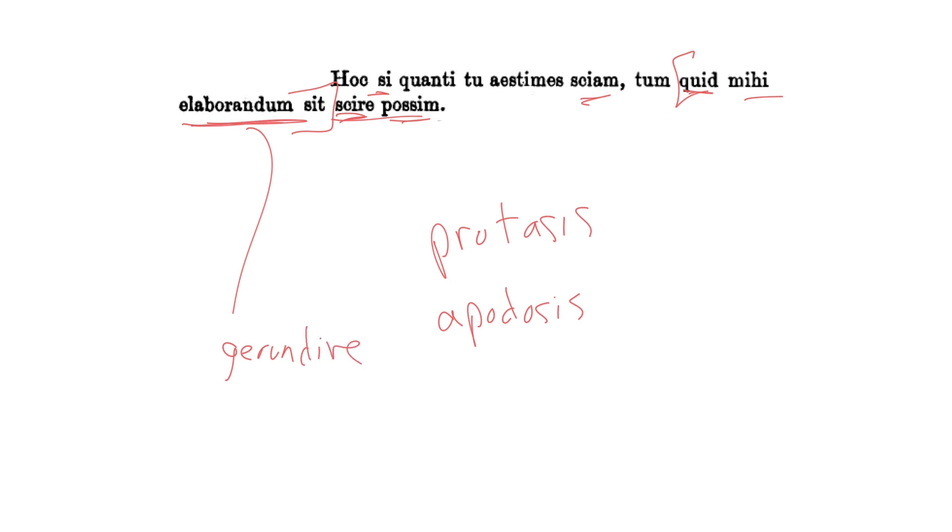So elaborandum here is the gerundive, that is the verbal adjective. It's from the first conjugation verb elaboro, elaborare, like that. With sit, this whole thing is called the passive periphrastic. Remember I said there was a lot of grammar in this one. Passive periphrastic with mihi, the dative of agent, the dative of agent. And this is an indirect question.